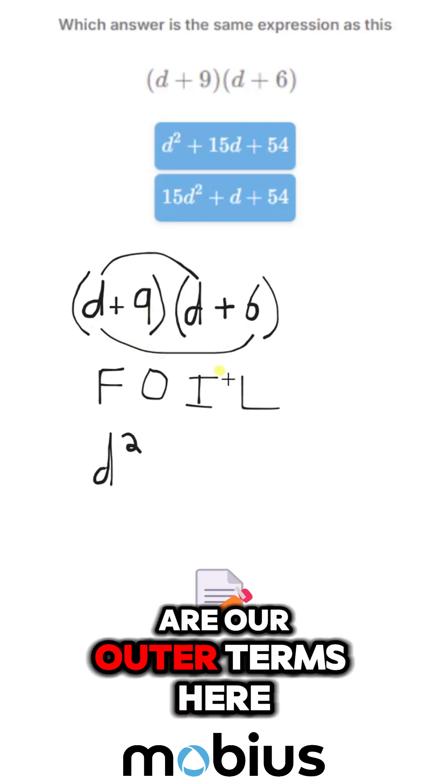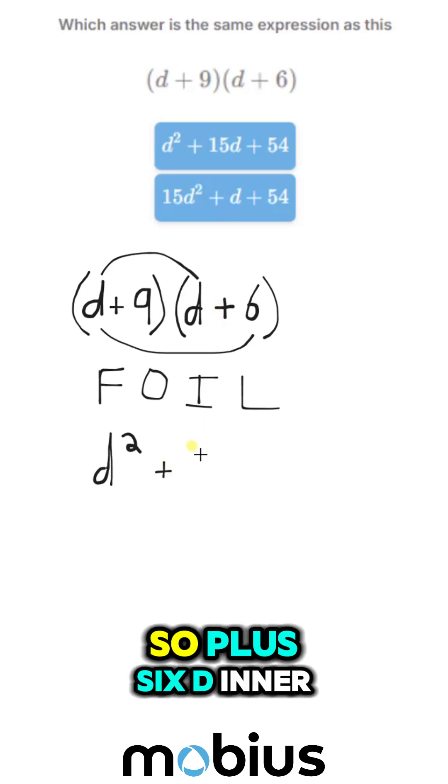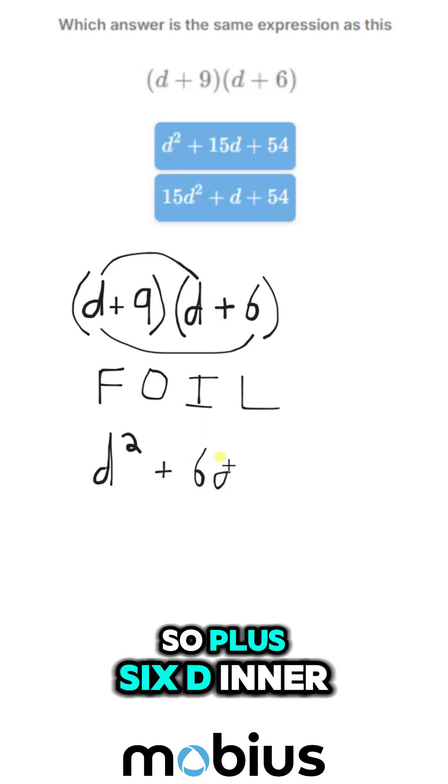Outer, these are our outer terms here. So the 6 has a plus by it, so plus 6d.